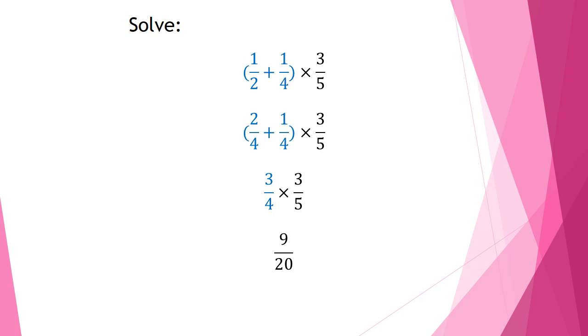Now, I'm done with the first part, simplifying what's inside the bracket. I have to copy times 3 over 5. It becomes like normal multiplication. All I have to do is multiply numerators by each other. 3 times 3 is 9. Denominators by each other. 4 times 5 is 20.